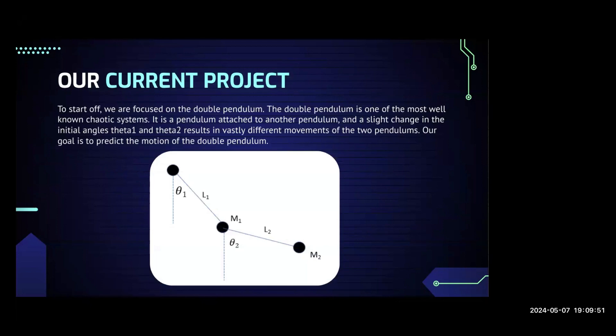We are currently focused on the double pendulum, which is one of the most well-known chaotic systems. Basically, it's just a pendulum attached to another pendulum on the end of it. By changing the initial angles of the pendulum, it can result in vastly different motions. As you can see in the picture, from the vertical line down from the joint point, theta 1 and theta 2 can be any angle. Depending on those angles, the trajectory of the pendulum is going to change.